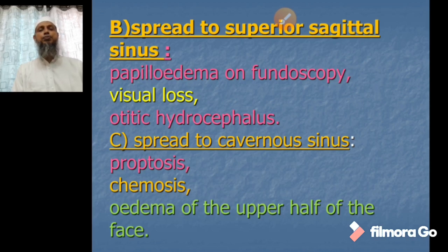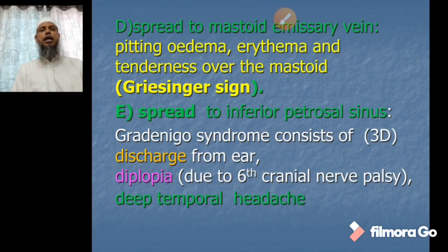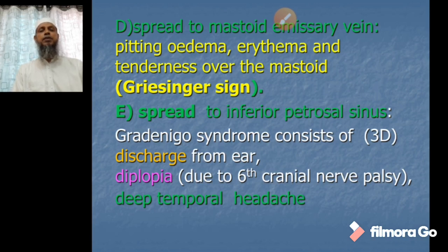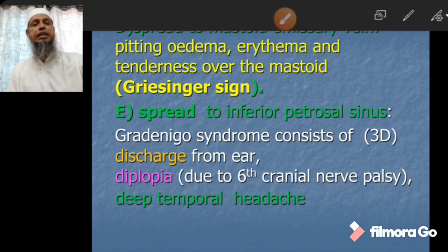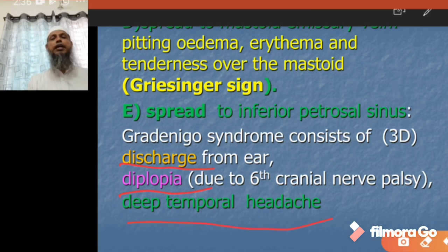If the thrombus spreads to the mastoid emissary vein, there will be pitting edema, erythema, and tenderness over the mastoid, which is called Griesinger's sign. If it spreads to the inferior petrosal sinus, there will be Gradenigo's syndrome, which consists of three symptoms: number one, ear discharge; number two, diplopia; number three, deep temporal headache. These three together are called Gradenigo's syndrome. Diplopia is usually due to sixth nerve palsy.